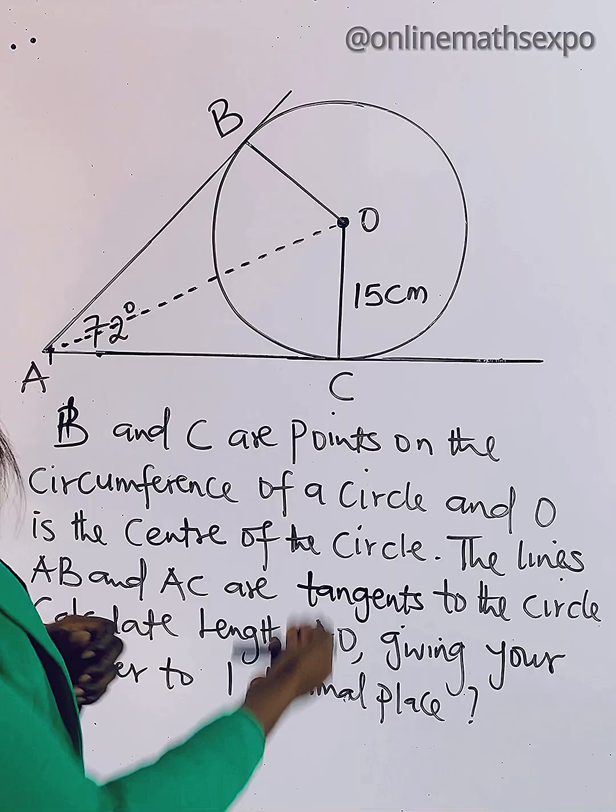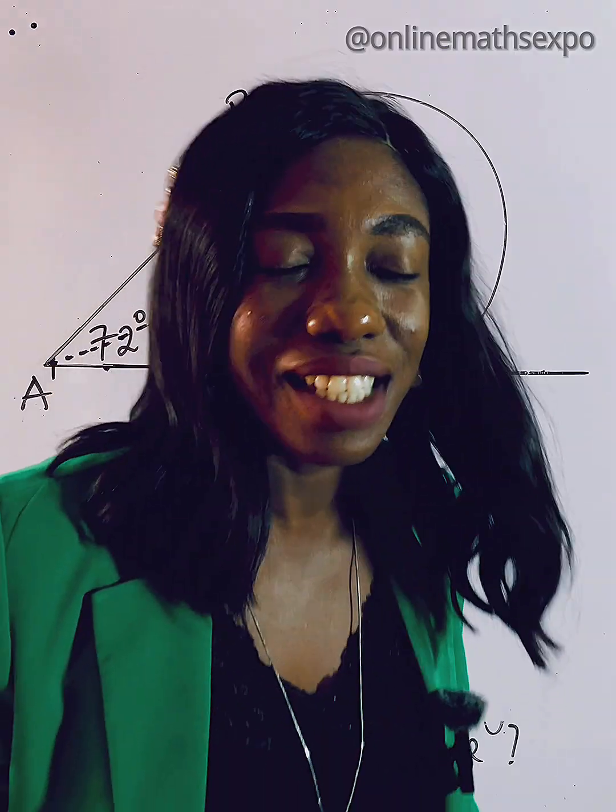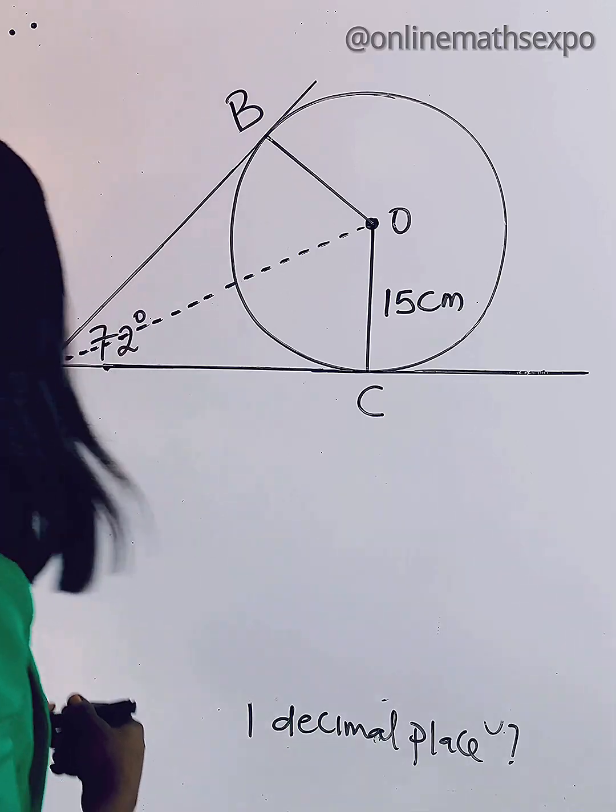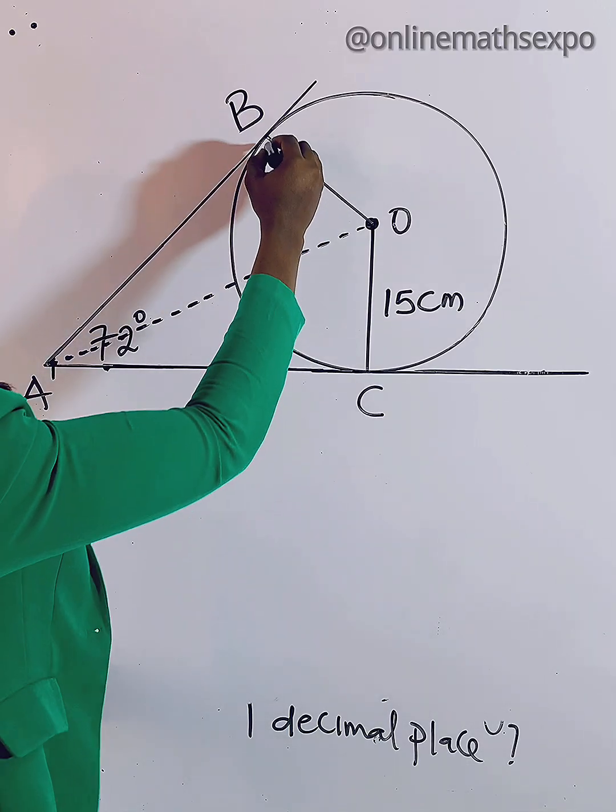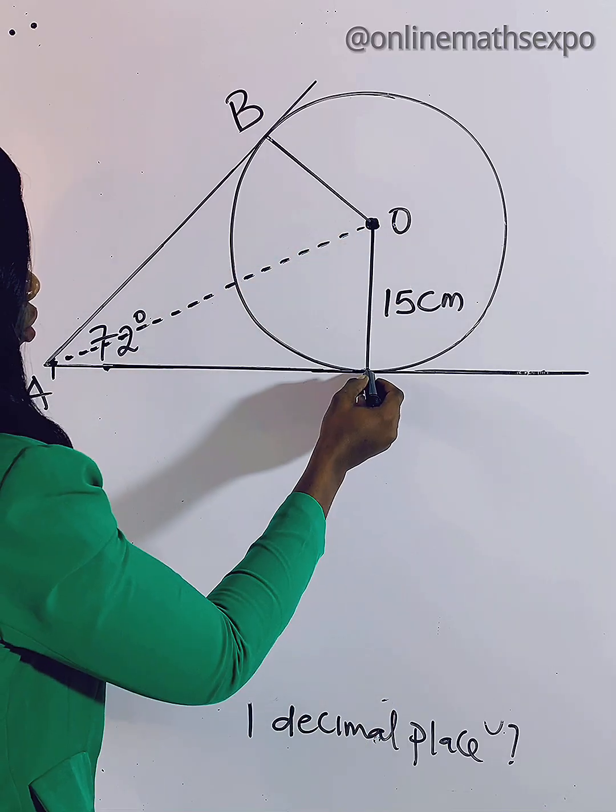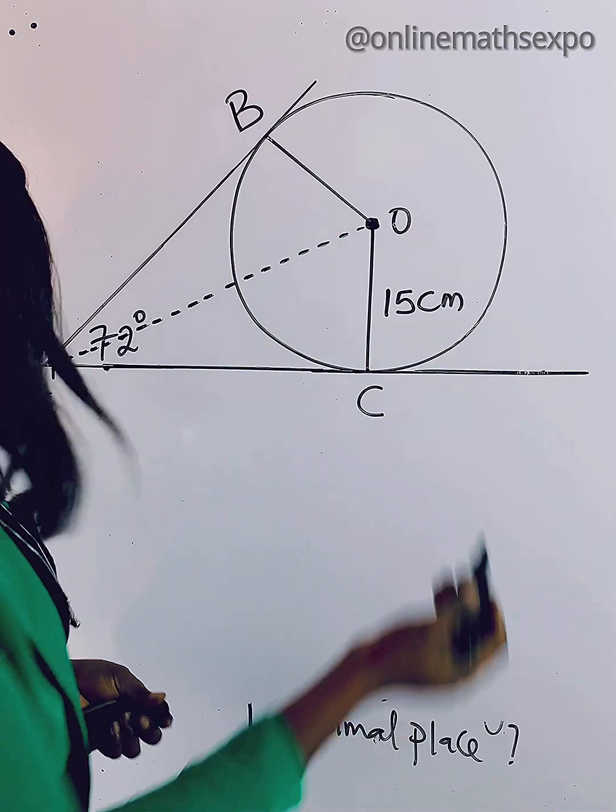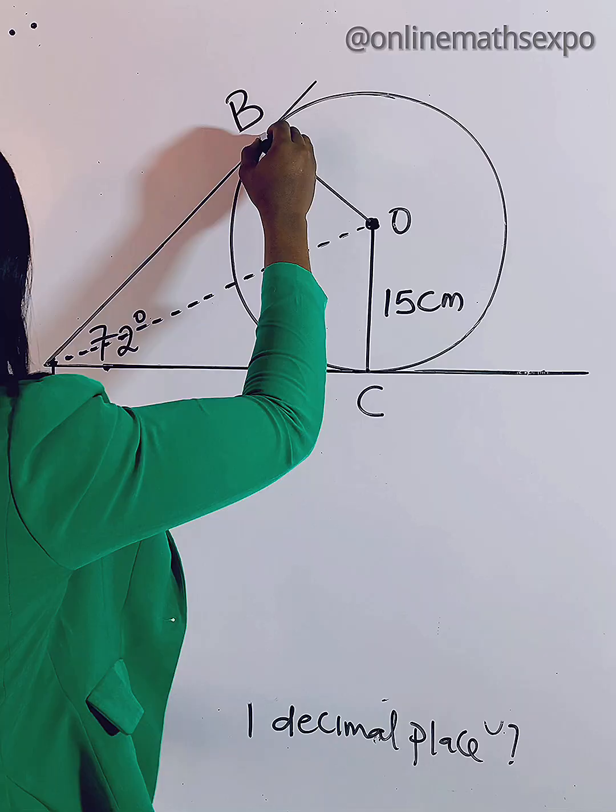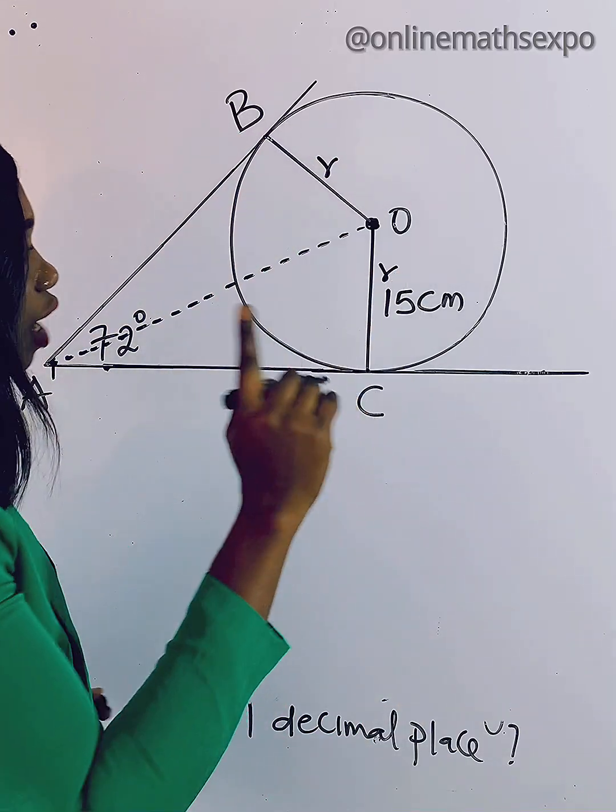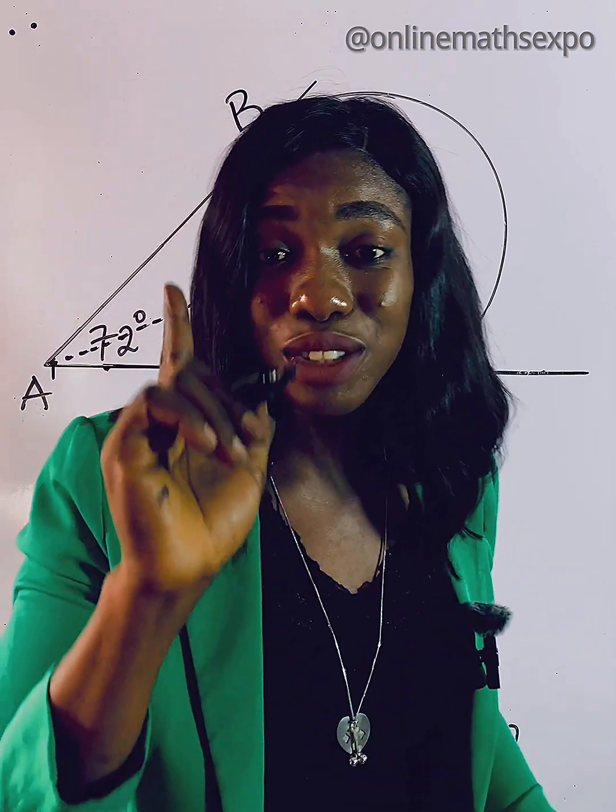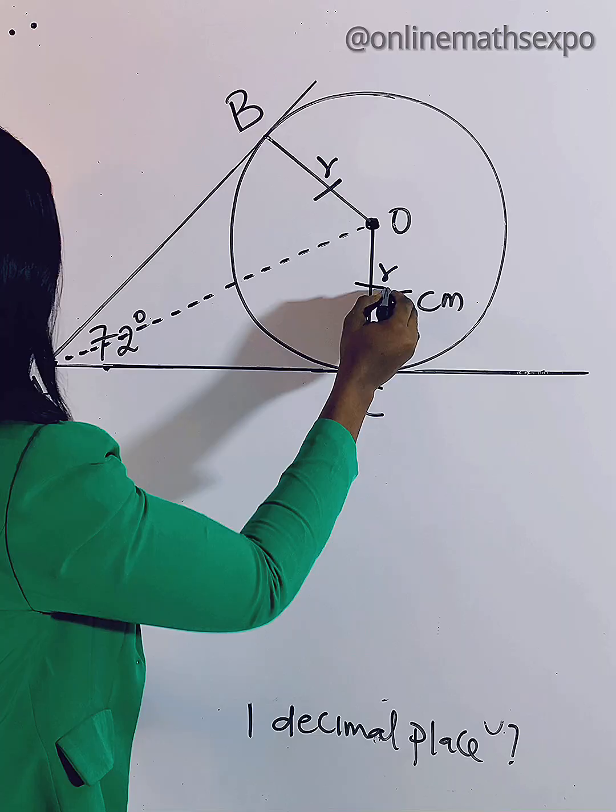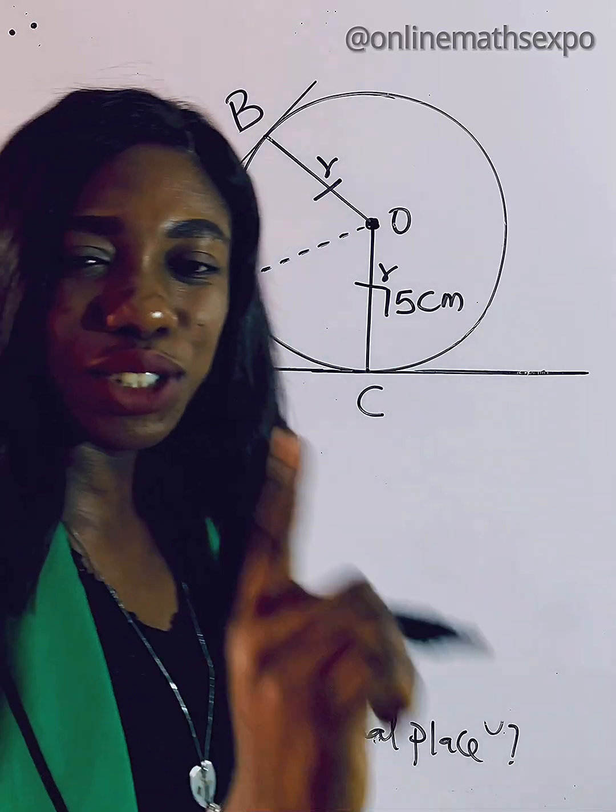To find this length AO, what do you do? Just observe - watch carefully. This is the center of the circle. From the center to the circumference is the radius. This is your radius and this is your radius. One thing about radius is that radii are the same, so what it means is that this line is equal to this line.